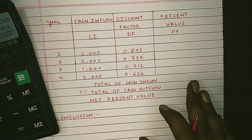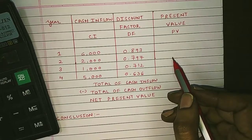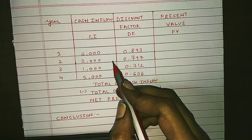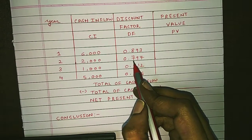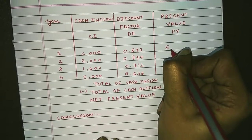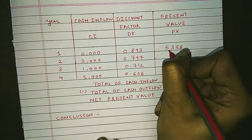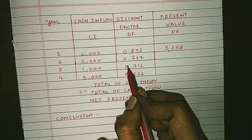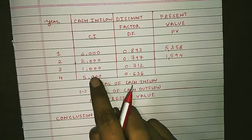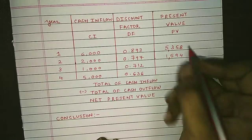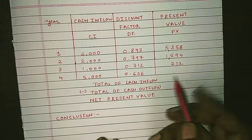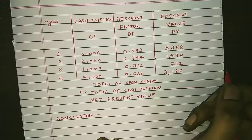The next step is calculation of present value, which is simply cash inflow multiplied by the discount factor. For year one: 6000 × 0.893 = 5358. For year two: 2000 × 0.797 = 1594. For year three: 1000 × 0.712 = 712. For year four: 5000 × 0.636 = 3180.